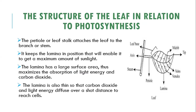Now let's look at the structure of the leaf in relation to photosynthesis. Photosynthesis takes place within the leaf of a plant, and various leaf structures facilitate this process. The petiole, or leaf stalk, is the structure that attaches the leaf to the branch or stem. It keeps the lamina — the broad, flat external part of the leaf — in a position that enables it to receive a maximum amount of sunlight.